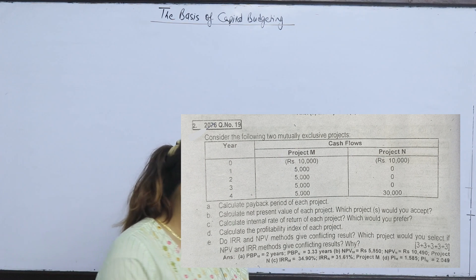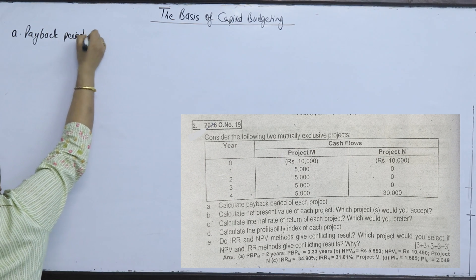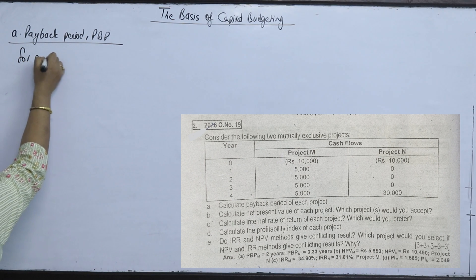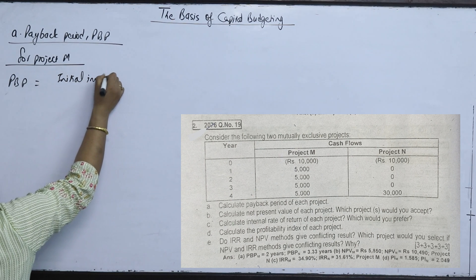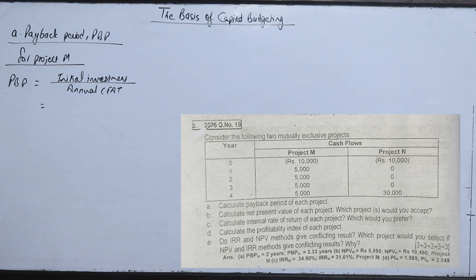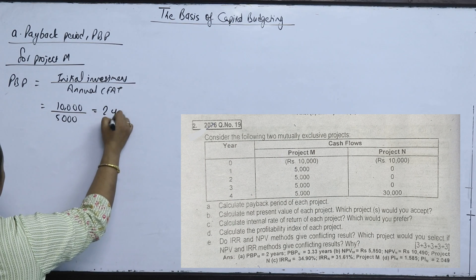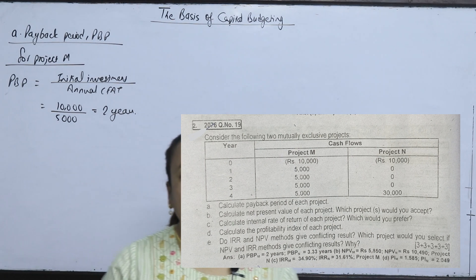Part (a): Calculate the payback period of each project. We need to determine the payback period for each project. We will divide the payback period calculation for Project M and Project N.